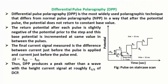Differential Pulse Polarography (DPP) is the most widely used polarographic technique that differs from normal pulse polarography (NPP) in that after the potential pulse, the potential does not return to a constant base value. The return potential after each pulse is slightly negative of the potential prior to the step, and this base potential is incremented at the same value in between the pulses.